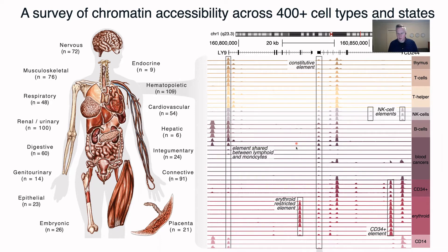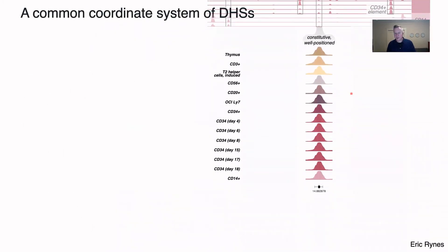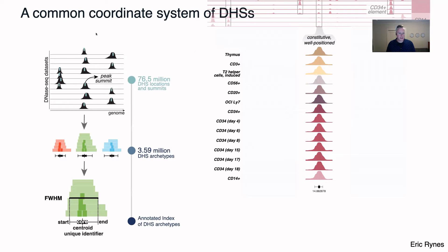The challenge first is to come up with a common coordinate system in which we can consider these DHSs. We've come up with a quite simple computational method of achieving this, which basically boils down to detecting peaks in individual datasets, along with an estimate of where their most likely summit position is. We end up with more than 75 million of these peaks, then basically projecting all these summit positions down onto the genomic axis to identify isolated accessibility events, and then going back to the full width of each peak position to come up with the consensus delineation of where the likely start and end positions of these elements are.